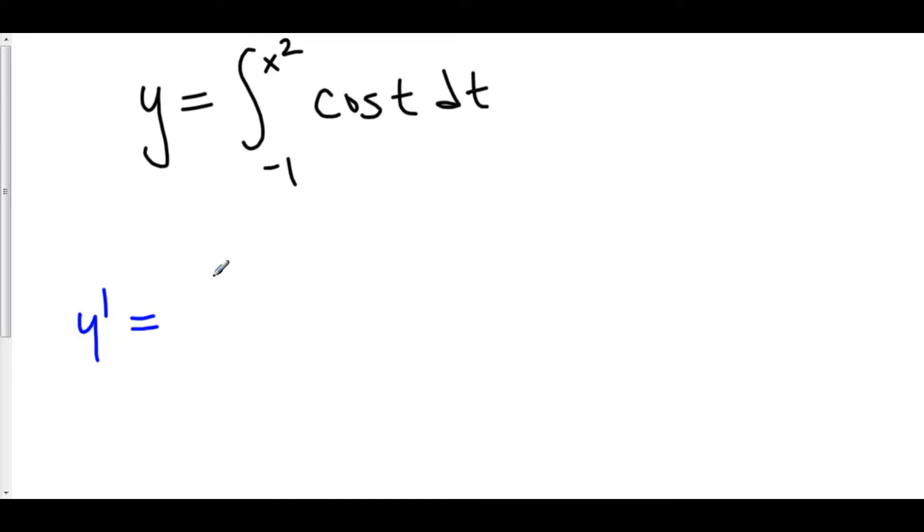First, plug it in: cos(x²). Then multiply by the derivative of your stuff, the stuff up here. The derivative of x² is 2x. So the answer is 2x·cos(x²).